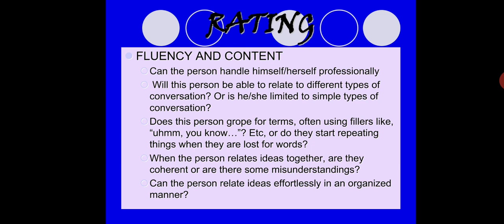When a person relates ideas together, are they coherent or is there misunderstanding? For example, if asked 'Do you have a most favorite family member?' and the candidate answers 'I like to spend time with my family because it makes me happy,' that misses the mark — you should mention a specific person and describe why that person is your favorite. The problem occurs when a candidate attempts to respond to a question they don't fully understand.